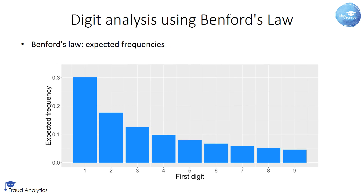Benford's Law, however, predicts a different distribution for the first digit of a number. According to Benford's Law, the probability that the first digit equals 1 is about 30%, while it's only 4.6% for digit 9.